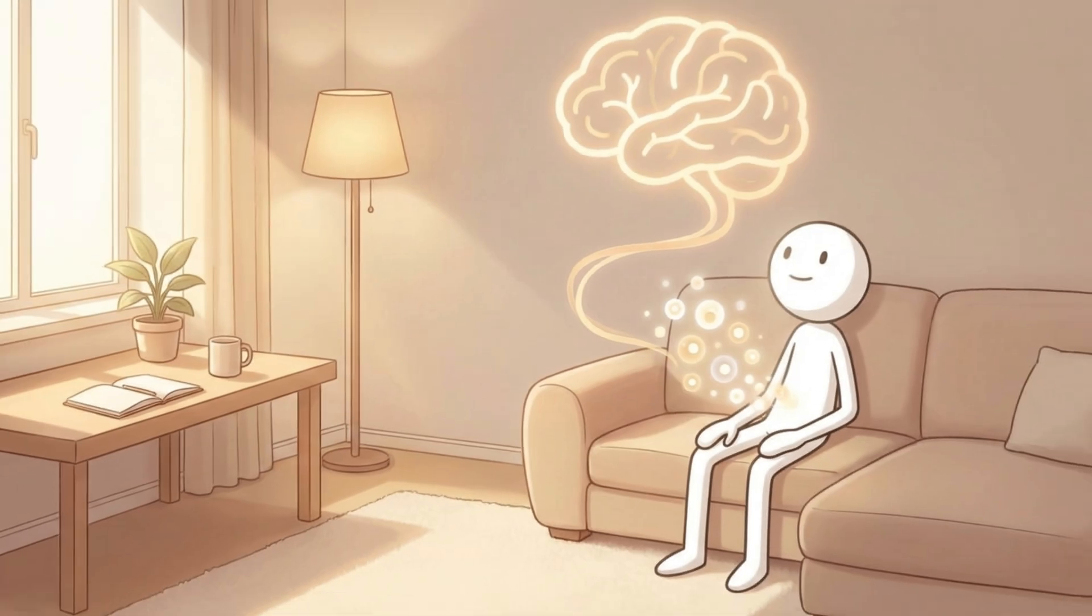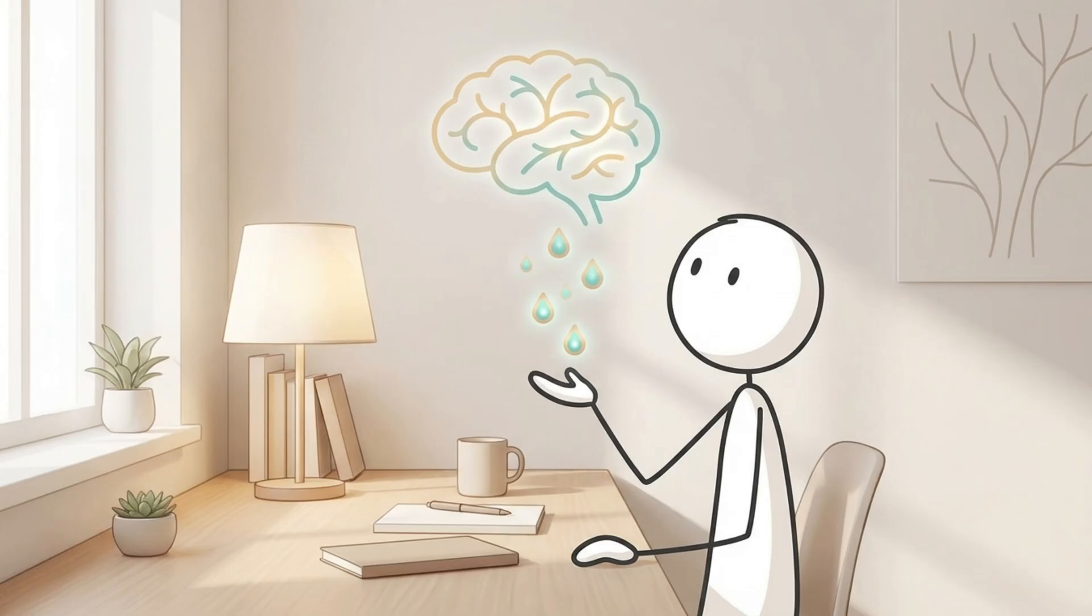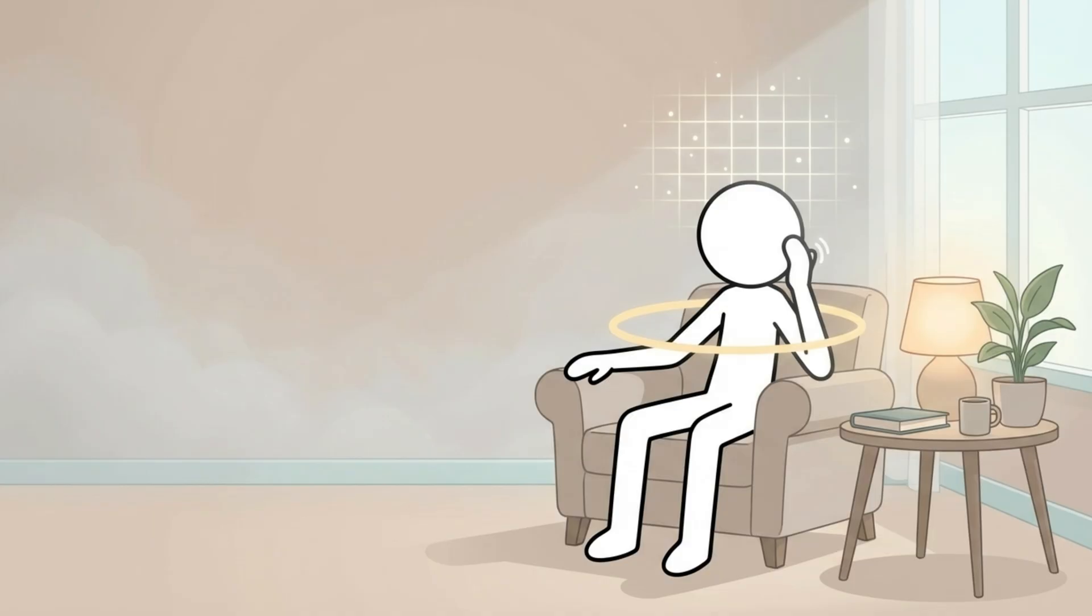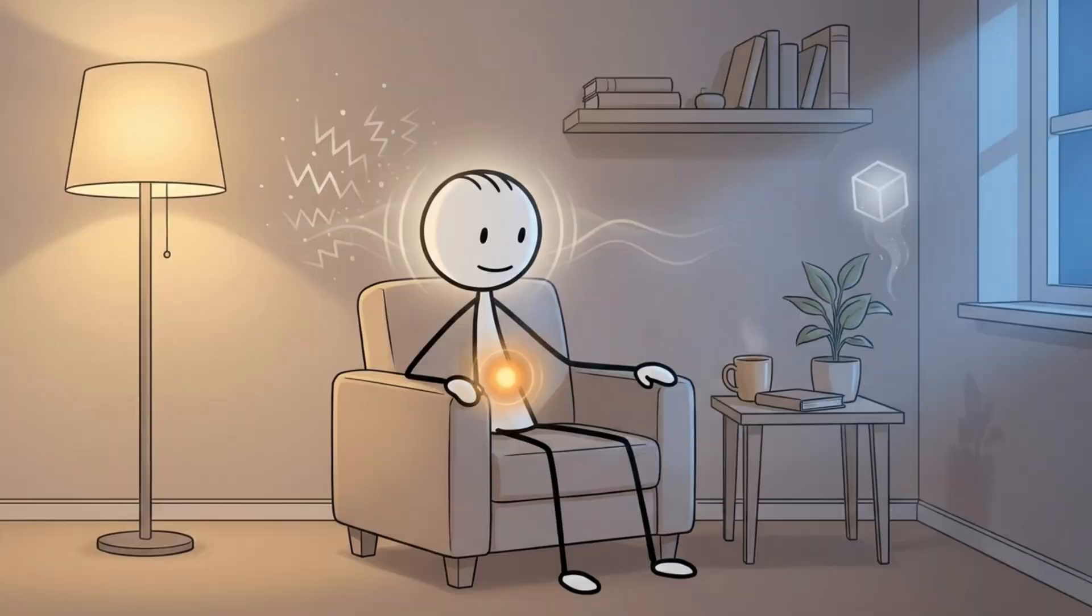As your cells repair themselves, the brain begins its own transformation. Fasting triggers an increase in BDNF, a powerful protein that supports neuroplasticity, the brain's ability to grow, adapt, and strengthen neural pathways. Think of BDNF as a kind of fertilizer for your neurons, encouraging them to fire more efficiently and communicate more clearly. Many Americans who begin intermittent fasting report a surprising shift here. Thoughts feel sharper, emotions steadier, and that familiar mental fog seems to dissolve. It's not adrenaline or hype. It's a quieter, deeper clarity born from stability instead of sugar.